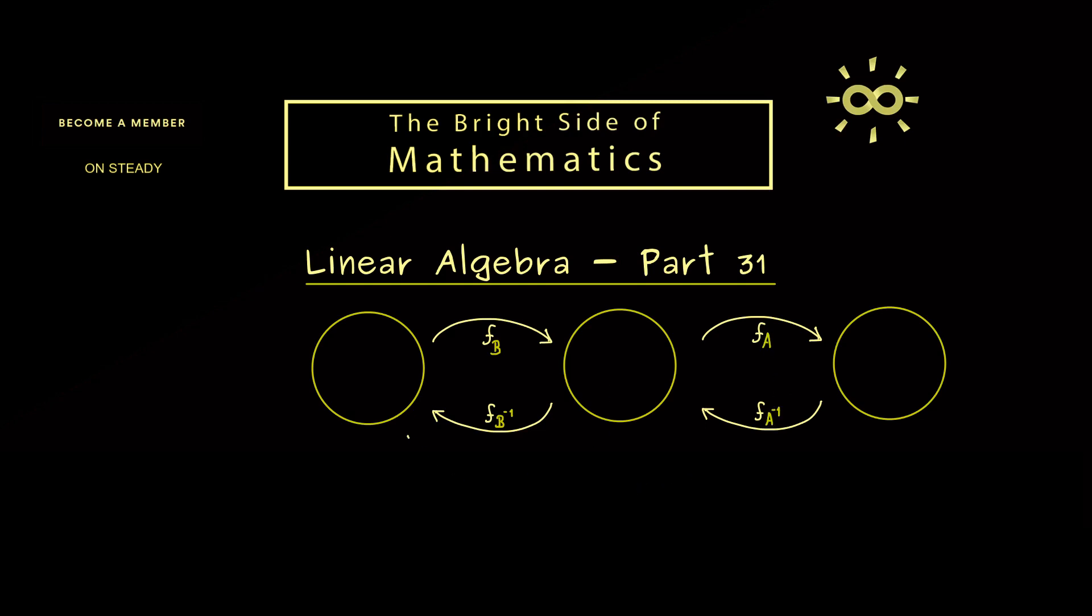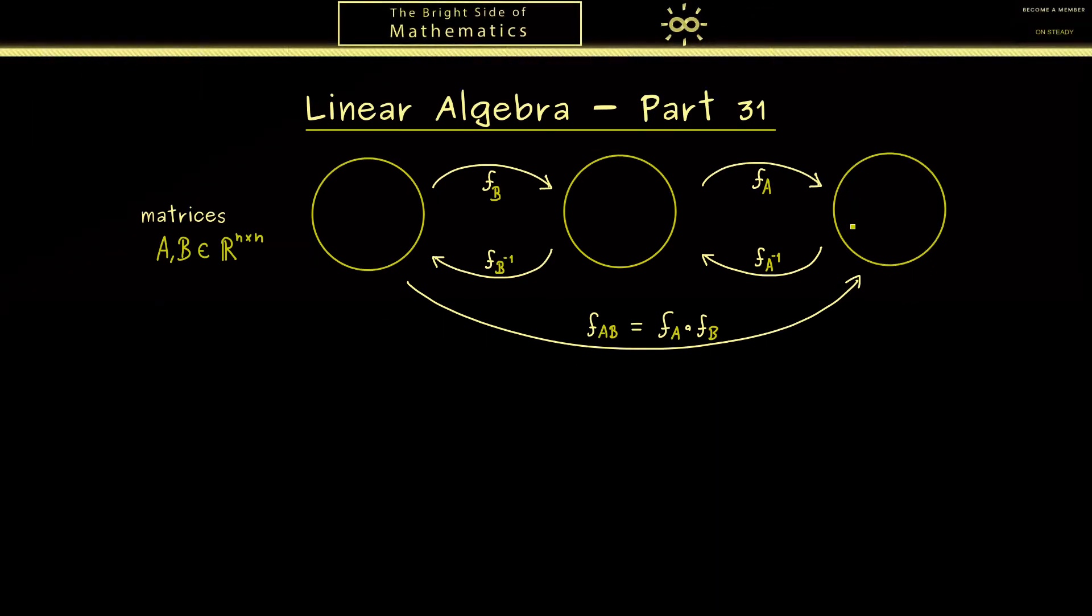And now it might be interesting to extend this picture here with a second map and a second matrix A. Because then we can also look at the composition of both maps. So in fact this is f_A after f_B. And also here please recall this is connected to the matrix product AB. Okay, and now the question is what can we say about the inverse of this composition. Obviously if you look at the picture you already see the connection here. The inverse is simply given by the composition of both inverses. In other words we have f_B inverse after f_A inverse is equal to the inverse of f_AB, which is again related to the inverse of this matrix here.